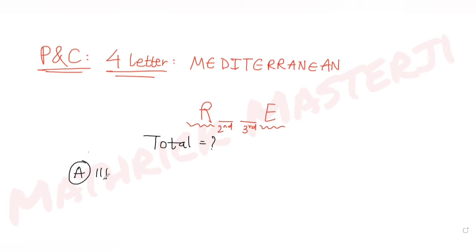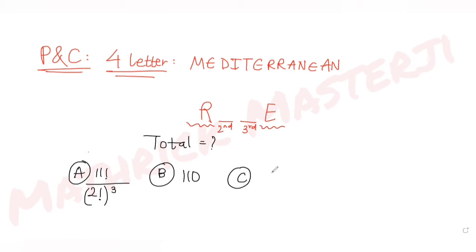The answer choices are: the first option is 11 factorial divided by 2 factorial cubed; the second is 110; the third is 56; and the fourth option is also given. We need to figure out which answer choice is correct.